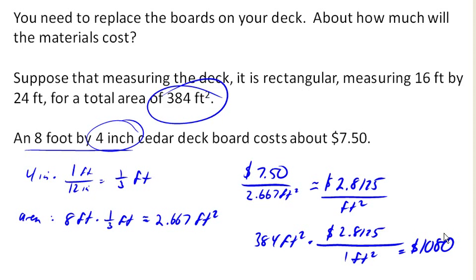Of course, that assumes that we don't have any waste, and that it all fits perfectly. That's usually not the case. You should usually add at least 10% to account for waste. But, as an estimate, about $1,080.